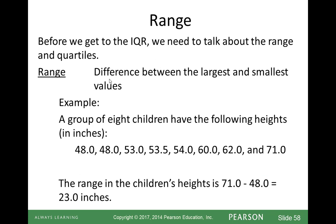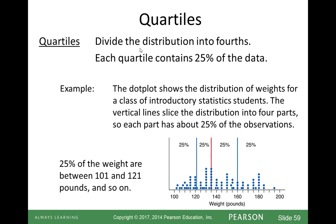First, the range is simply the difference between the largest and smallest values. For our group of 8 children with heights, 48 inches is our smallest and 71 is our biggest, giving a range of 23 inches. When we look at quartiles, we divide the data into four equal parts. The median divides the data in two; quartile one divides the bottom half into two parts; and quartile three divides the top half into two parts. The interquartile range is the difference between quartile three and quartile one.